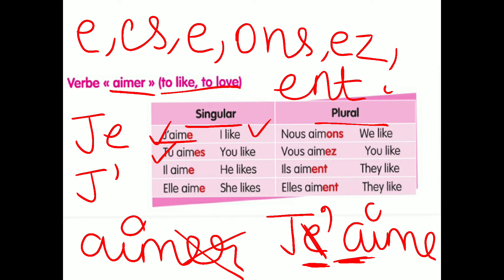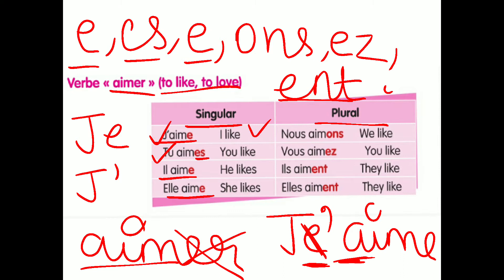For TU, you add ES — so TU AIMES. The radical AIM remains the same for all pronouns. IL/ELLE gets E — so IL AIME or ELLE AIME. NOUS gets ONS — NOUS AIMONS. VOUS gets EZ — VOUS AIMEZ. And ILS/ELLES gets ENT — ILS AIMENT or ELLES AIMENT. I hope you got these conjugations.